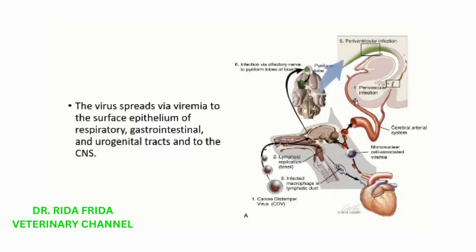Here we have a pictorial elaboration of how this virus affects the different systems. Firstly, replication occurs in the lymphatic tissues. The infected macrophages then carry the virus to the blood circulation, where mononuclear cell-associated viremia occurs. The virus then reaches the brain, where firstly perivascular infection and then periventricular infection takes place. The infection via the olfactory nerve can also reach the piriform lobes of the brain.